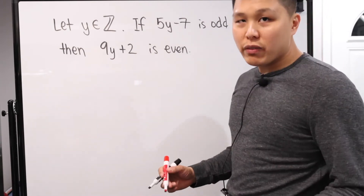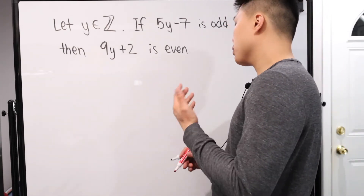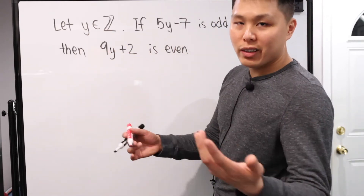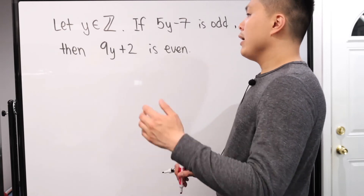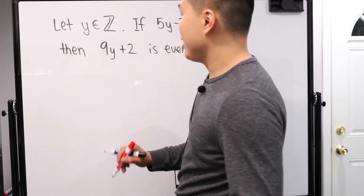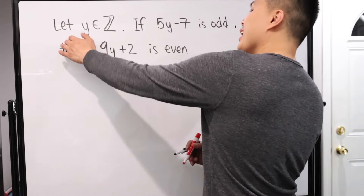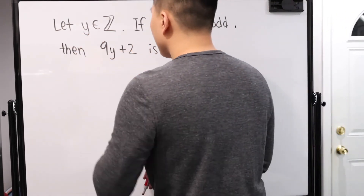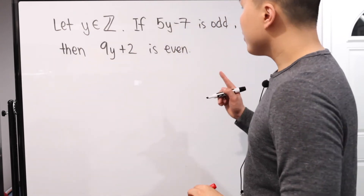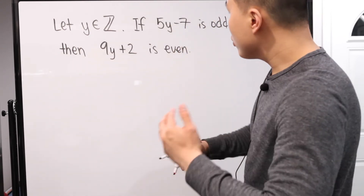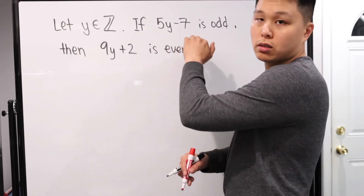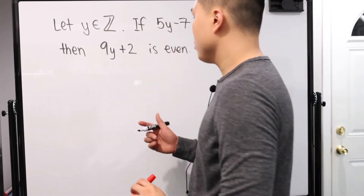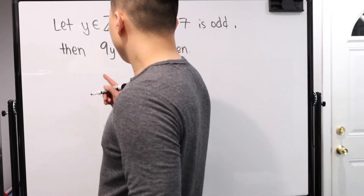Let's look at the third problem. This one won't save us a lot of time — the work is probably about the same — but since we're learning and practicing the method, we'll do it anyway. Let Y be an element of the integers. If 5Y minus 7 is odd, then 9Y plus 2 is even. We know the condition is '5Y minus 7 is odd' and the result is '9Y plus 2 is even.' We're going to assume the opposite result and show the opposite condition.